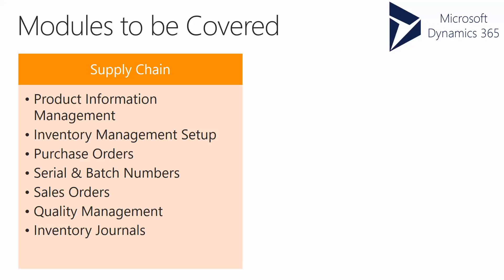Inventory Management setup covers item groups, item model groups, FIFO, LIFO, and whether the product is stocked versus non-stocked. Module four talks about purchase orders, heavily focused on creating new orders out of the box along with setup and configuration. We'll also talk about serial numbers, batch numbers, and tracking dimensions — how to configure and set them up on products.